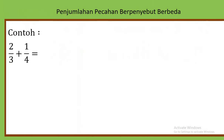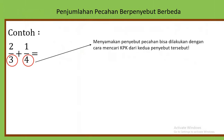2 per 3 ditambah 1 per 4. Yang ibu lingkari merah ini namanya penyebut. Jadi, penyebutnya harus bernilai sama.